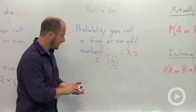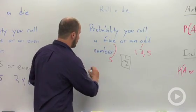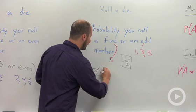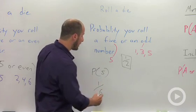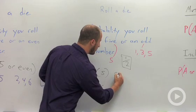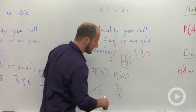So what we get is the probability that we roll a five. The probability of a five is just going to be one-sixth. Plus the probability of an odd, which is going to be three out of six,